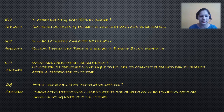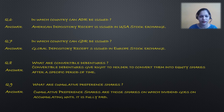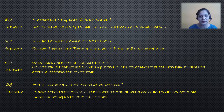What are cumulative preference shares? Cumulative preference shares are those shares on which dividend goes on accumulating until it is fully paid.